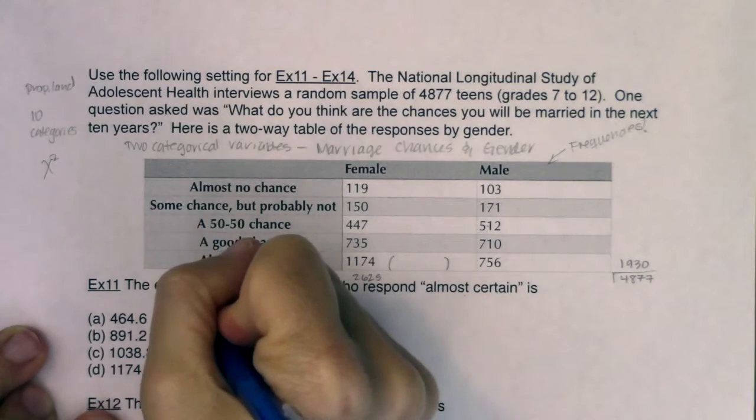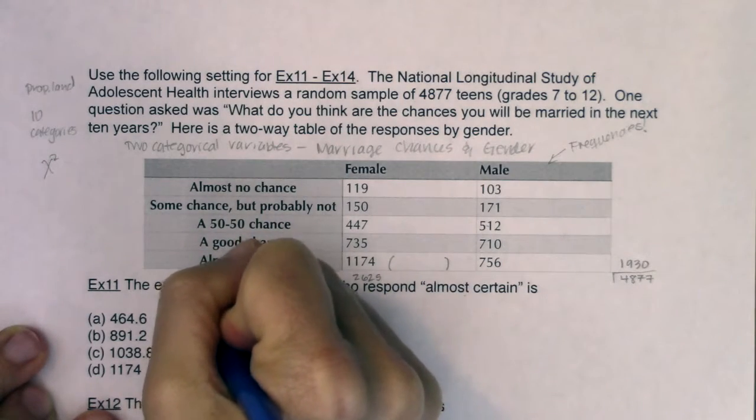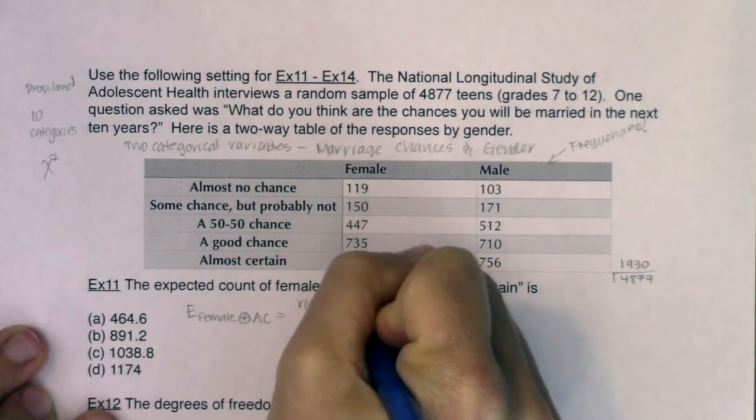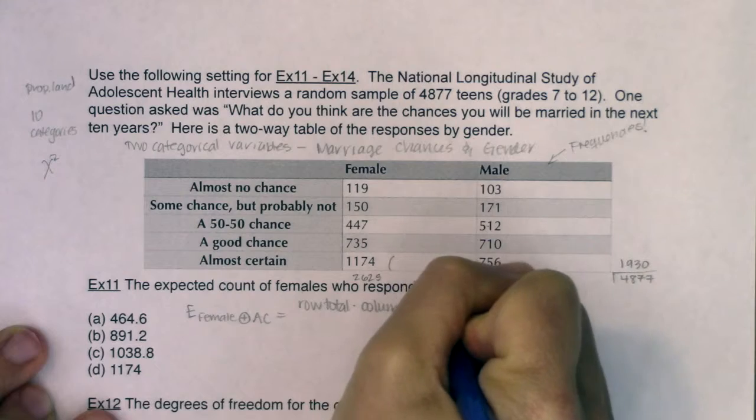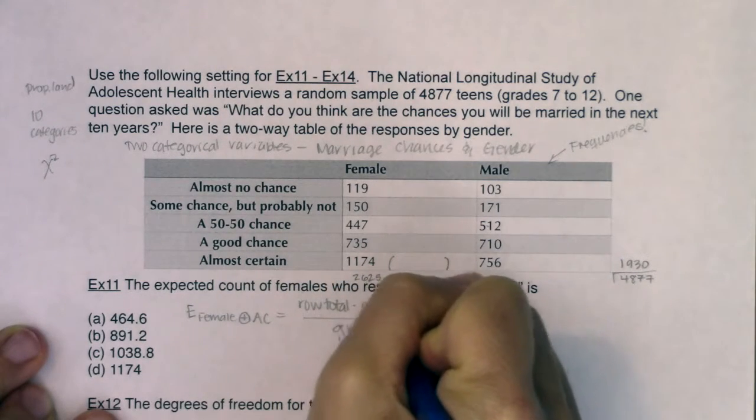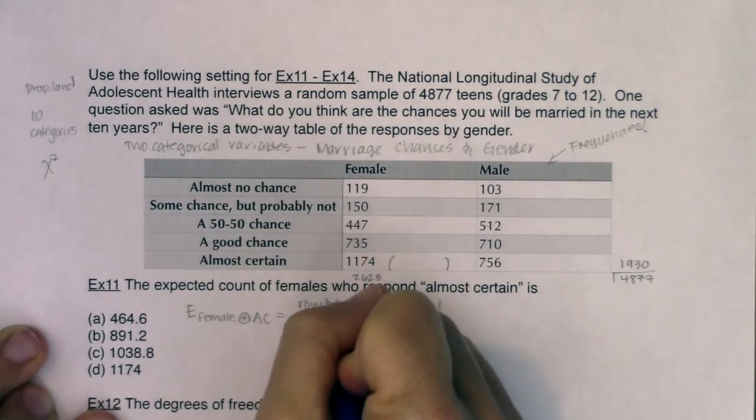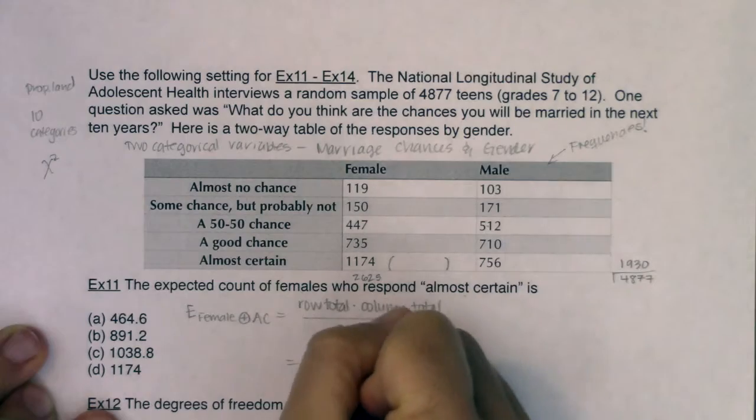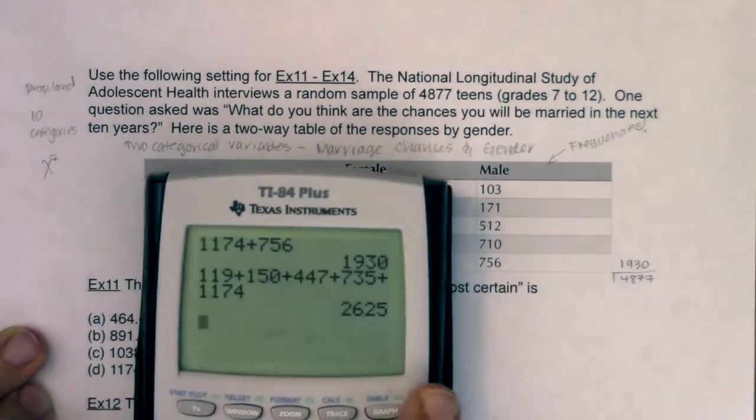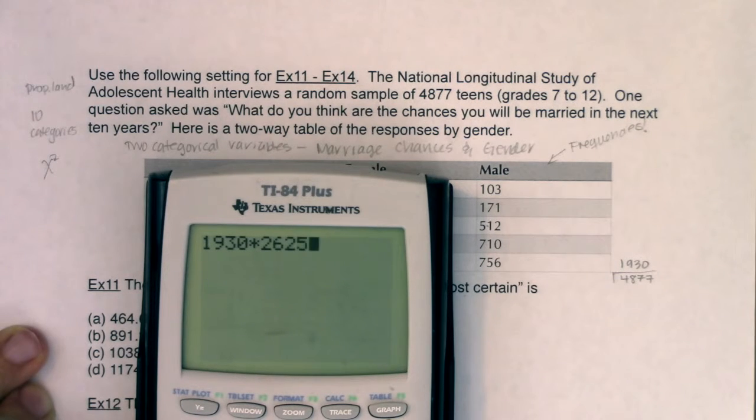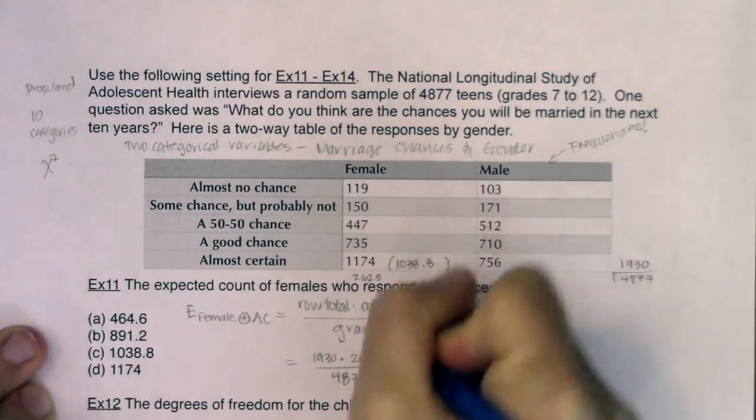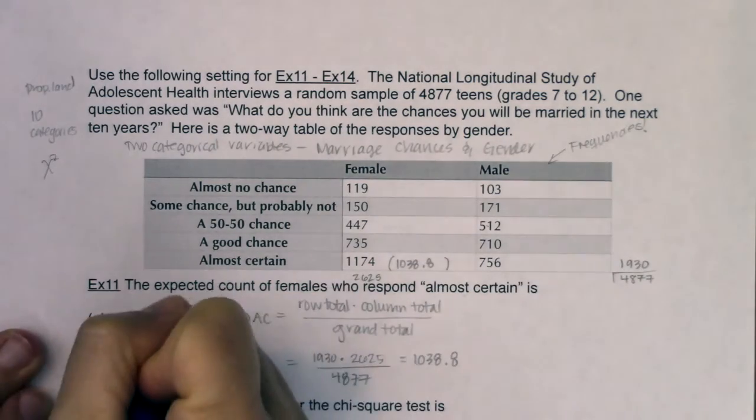So I'm just going to do the quick and dirty version of getting the expected count. So we want female plus almost certain. And that's always row total times column total. And I'm going to divide that out by grand total. So that would have been row total was 1930. Column total was 2625. And the grand total down here was 4877. So let's see what these numbers get me. So it looks like we have 1930 times 2625. And I'm going to divide that by 4877. Looks like I'm at 1038.8. And as I look over here, boom, great.